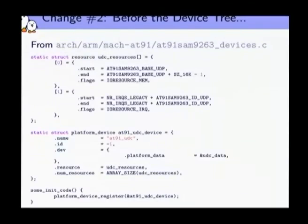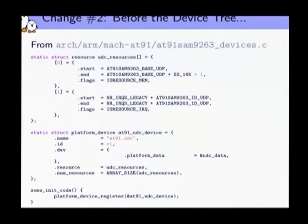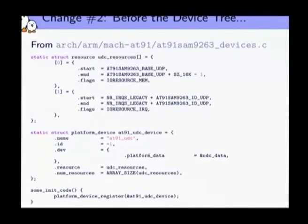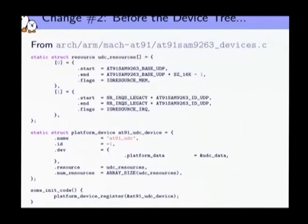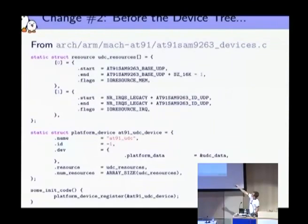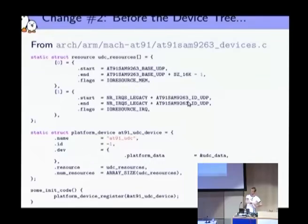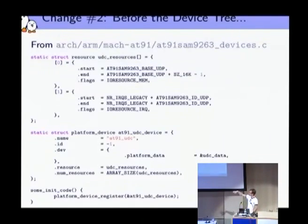Typically a lot of code was looking like this: at some point in kernel initialization, once we had detected the board and the SoC we were running on, we would register many peripherals. Here we're registering the USB device controller of an AT91 SoC from Atmel. We have a lot of C code that says: on this platform, I have a USB device controller; the driver is identified by this name — the string here is very important because it allows us to associate the device with the corresponding device driver; and this device is located at this address with this IRQ. Those informations are communicated to the device driver. So we had a lot of this kind of boilerplate C code — it was working, but it was seen as not being really nice to maintain.